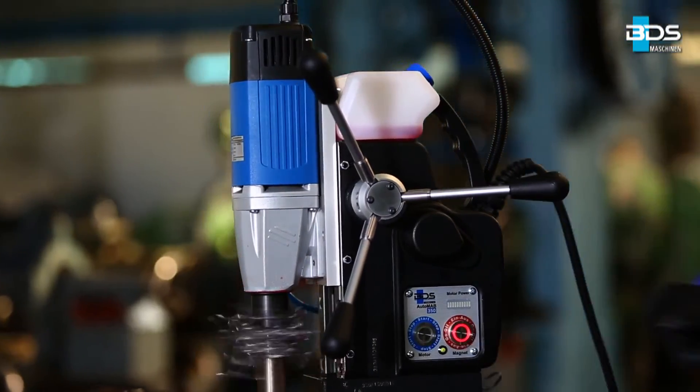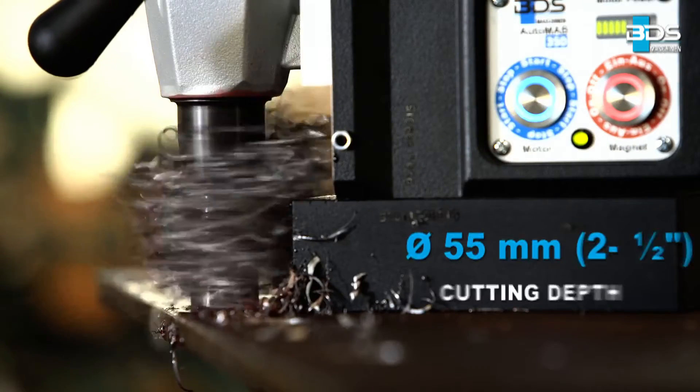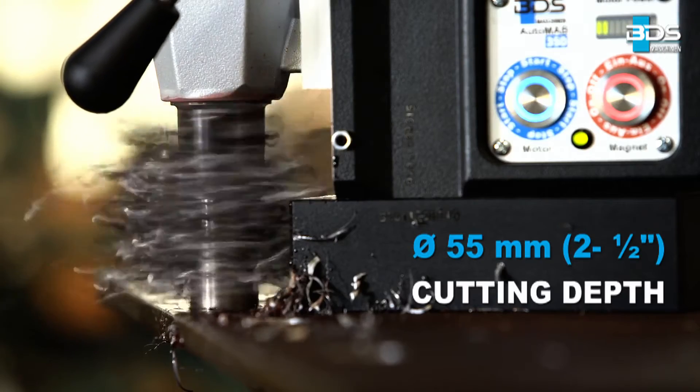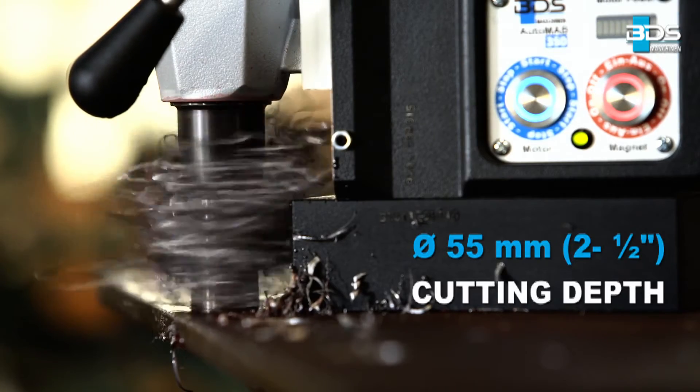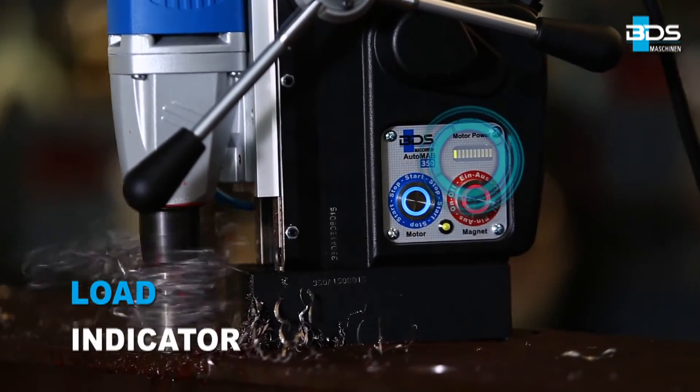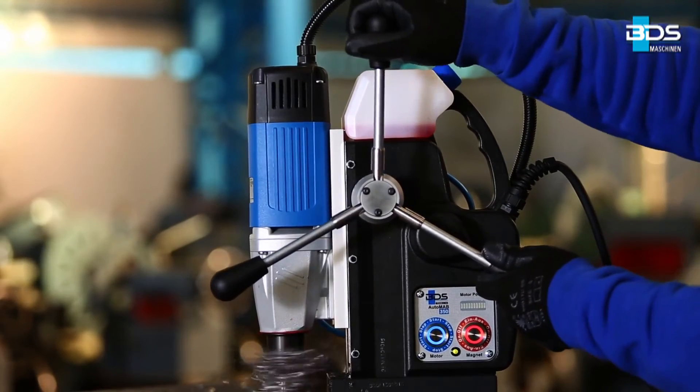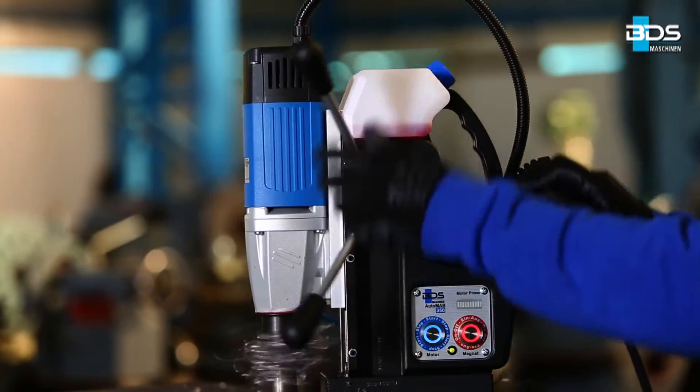The Automab 350 can drill up to 35mm diameter and up to 55mm cutting depth with annular cutters. The Automab 350 is equipped with brilliant load indicators, which stops the machine if the load is high, thus avoiding cutter breakage and any accidents.